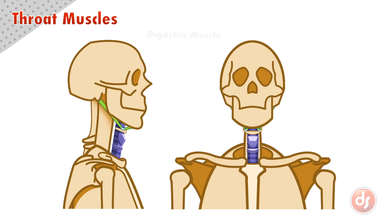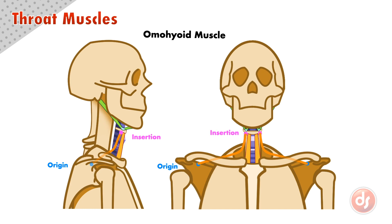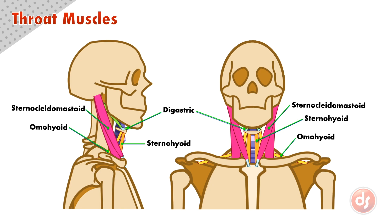We have two hyoid muscles as well. The sternohyoid originates on the underside of the sternum and the muscle comes straight up to insert into the bottom of the hyoid bone. It sits on either side of the throat cartilages, smoothing out the shape of the throat. The omohyoid originates on the inside of the scapula near the shoulder. The muscle comes across and then bends up to insert on the side of the hyoid bone, just behind the sternohyoid. The sternocleidomastoid muscles are much thicker and sit on the surface of these other muscles, covering up portions of them.